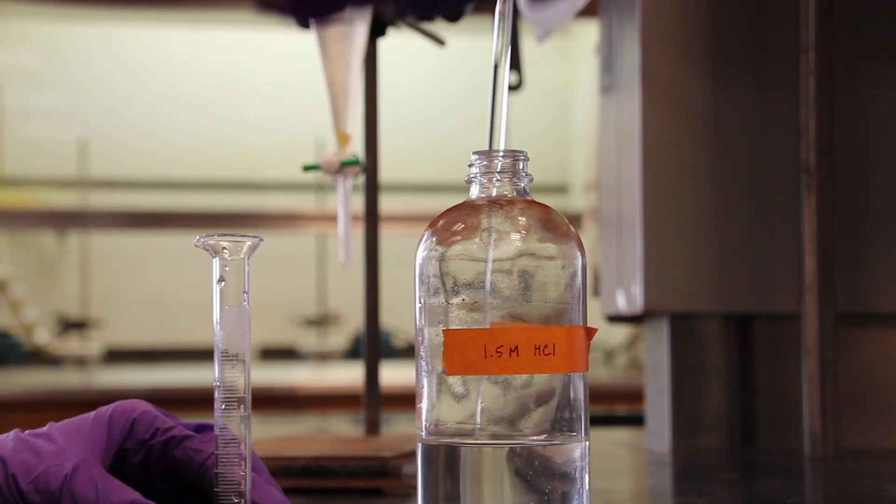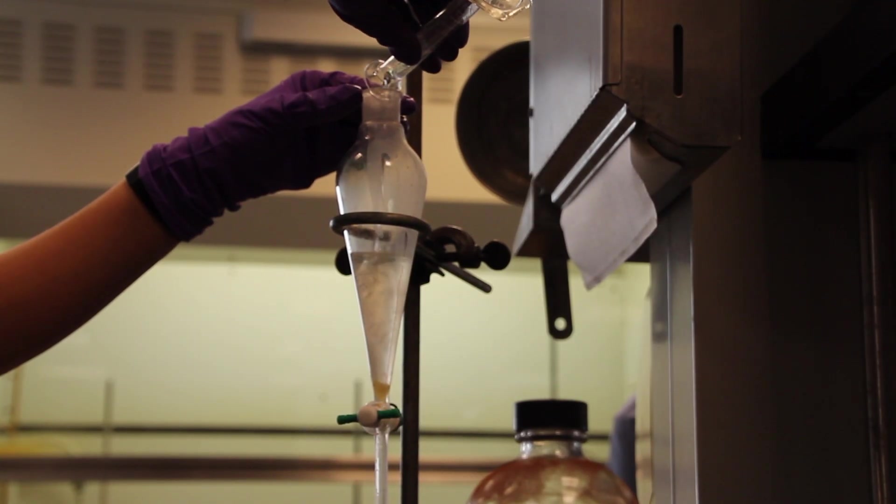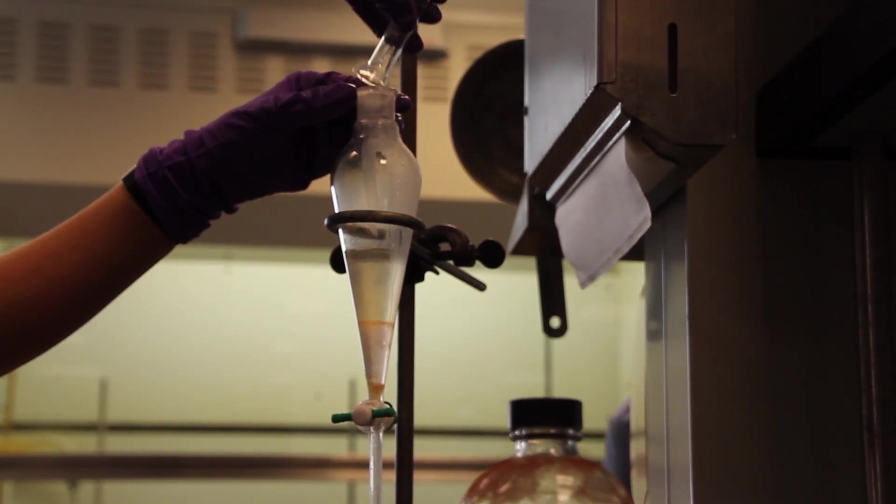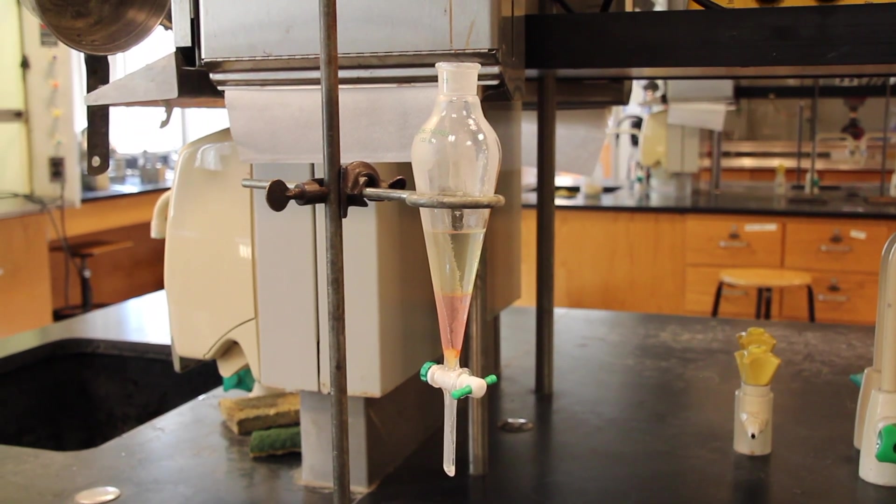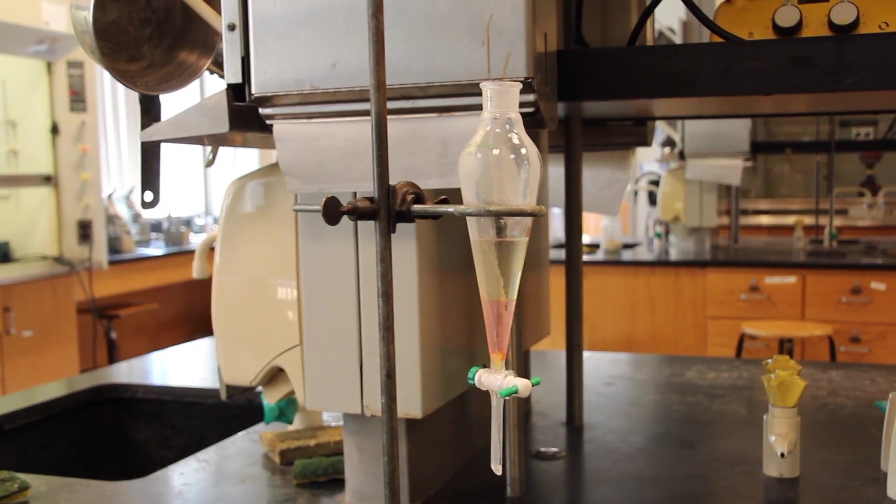Add 8 milliliters of 1.5 molar aqueous hydrochloric acid to the separatory funnel. Be sure that you can tell which layer is organic and which is aqueous by considering the densities.